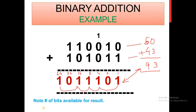You have to consider the number of bits available for the result. For example, if only 6 bits are available for storage, this result will produce an error, because the result requires 7 bits. The extra bit cannot be stored, and that is why there will be an overflow error. You must consider whether the result is accommodatable; if it requires more bits than available, it produces an overflow error.